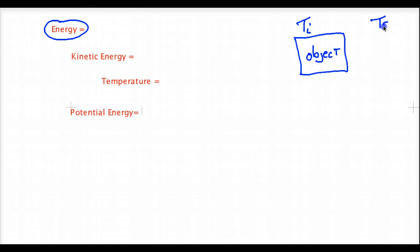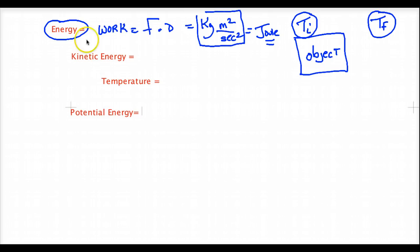So to measure energy, we need to understand the different types of energies. First of all, energy is essentially the ability to do work. And we learn that work is equal to a force times a distance. And that comes out to a kilogram meter squared per second squared. And that fancy unit is what a joule is equal to. And we learn that a joule is a measure of thermal energy.